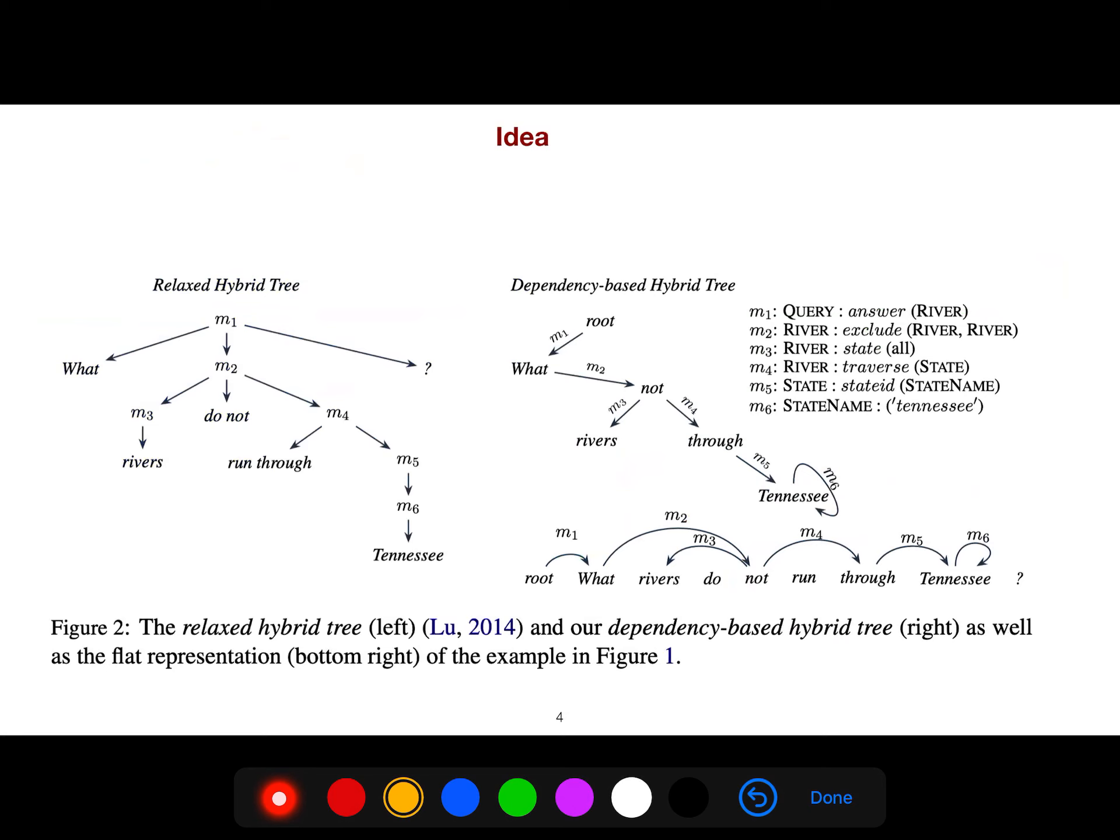For example, here we have a relaxed hybrid tree, and the dependency hybrid tree works like this: you see how beautifully these production rules are related. It can be seen in this graph that it's like dependency parsing, but the labels, instead of subject and object, are just these semantic things.